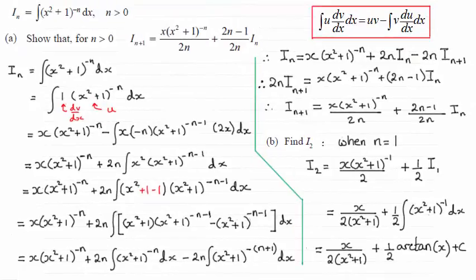Hi there. Now, this is quite a tricky question, in my opinion, on reduction formula. We were given I_n equal the integral of (x² + 1)^(-n), asked to integrate it with respect to x, and show that for n greater than 0, we got this reduction formula here.